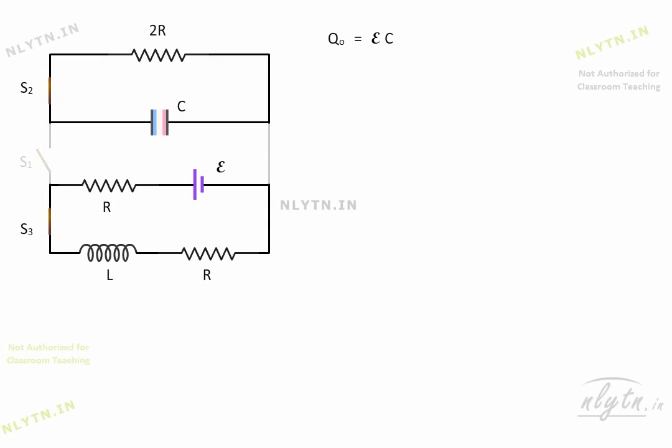For a discharging RC circuit, the charge on the capacitor is given by this equation. Therefore, the current in the RC circuit will be equal to this term.